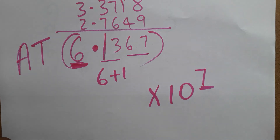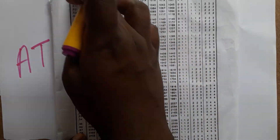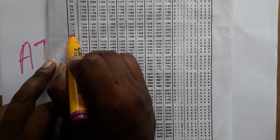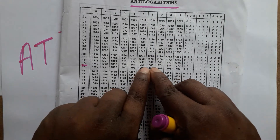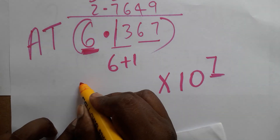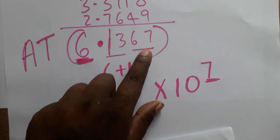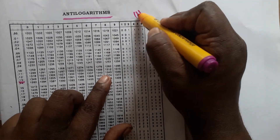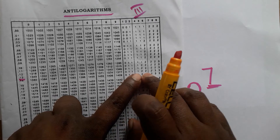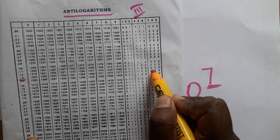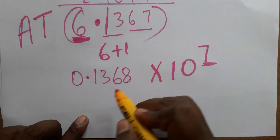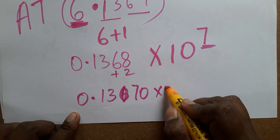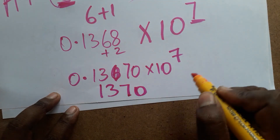Now we look up 0.1367 in the antilog table. The first column has the number, the second column gives the value. I look up 13 in the first column and 6 in the second column — they coincide at 1368. So I have 1.368 from the antilog table. The remaining digit is 7, which I look up in the third mean difference column and get 2. I add 2 to the last digit, giving 0.1370.